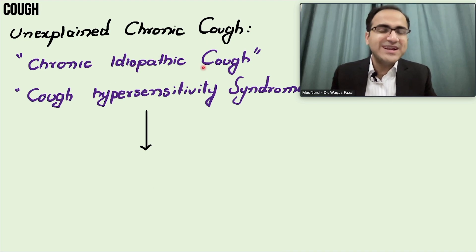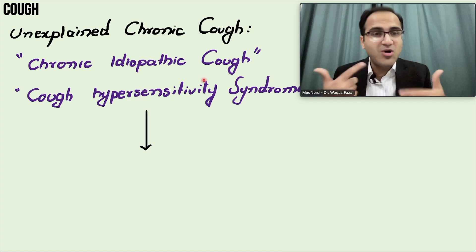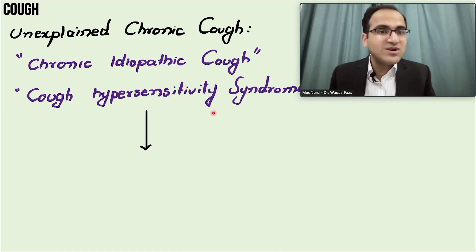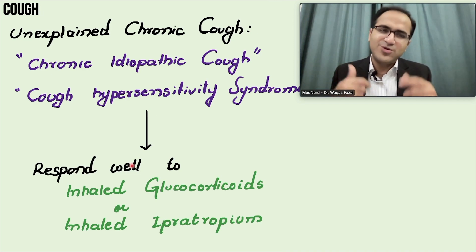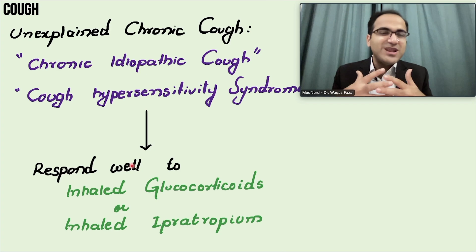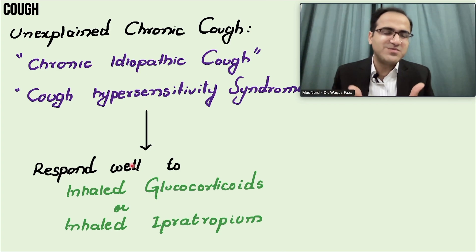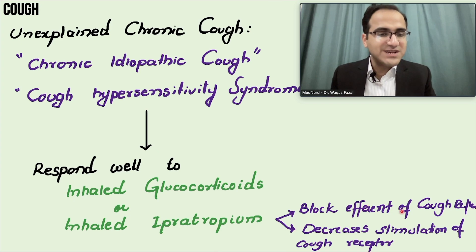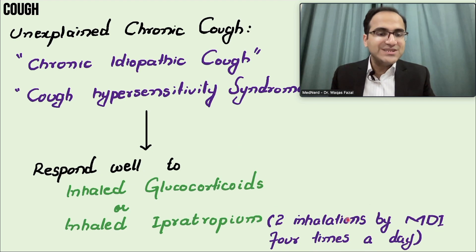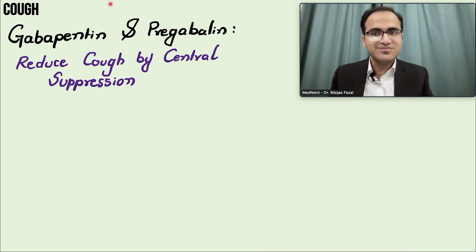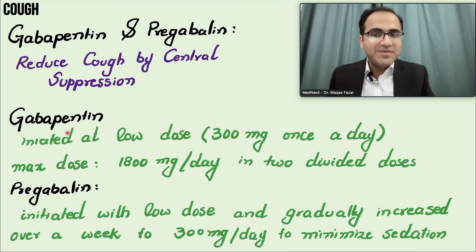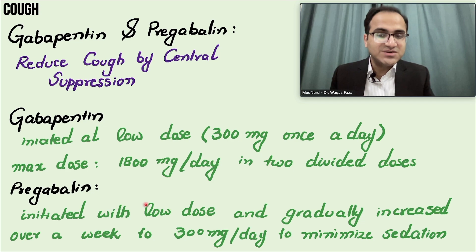Unexplained chronic cough (cough hypersensitivity syndrome) responds well to inhaled glucocorticoids or inhaled ipratropium, which blocks the efferent limb of the cough reflex and decreases stimulation of cough receptors (two inhalations by metered dose inhaler four times daily). Gabapentin and pregabalin reduce cough by central suppression. Gabapentin is initiated at 300 mg once daily, with a maximum of 1800 mg per day in two divided doses; pregabalin is gradually increased over a week to 300 mg per day.